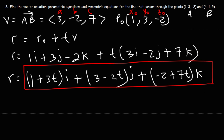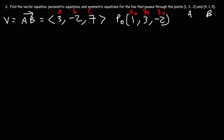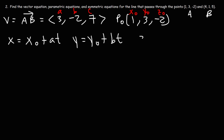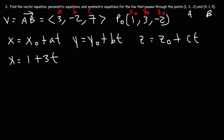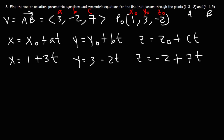For the parametric equations, using x equals x0 plus at, y equals y0 plus bt, z equals z0 plus ct: x0=1 and a=3, so x equals 1 plus 3t; y0=3 and b=negative 2, so y equals 3 minus 2t; z0=negative 2 and c=7, so z equals negative 2 plus 7t. These are the parametric equations for the line.